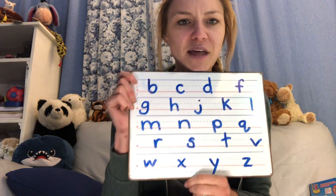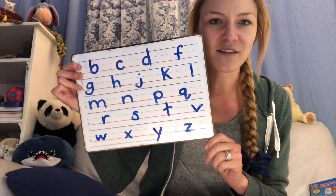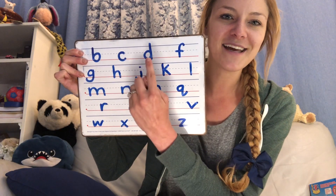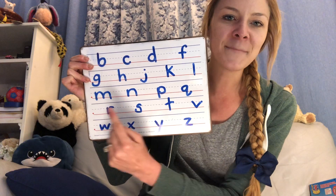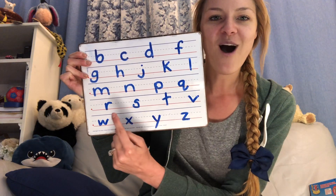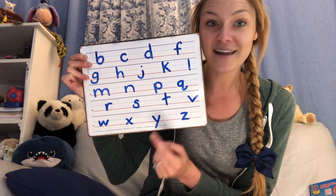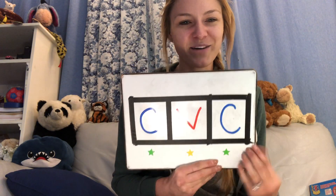Just to remind you, these are the consonants of the alphabet — the letters that usually only have one sound and go at the beginning or end of a CVC word. You can say them with me: B, C, D, F, G, H, J, K, L, M, N, P, Q, R, S, T, V, W, X, sometimes Y, and Z. So those letters are going to be the sounds at the beginning and end of these words.